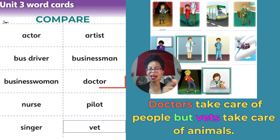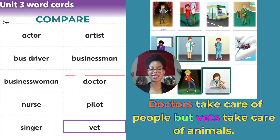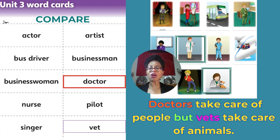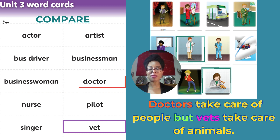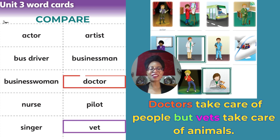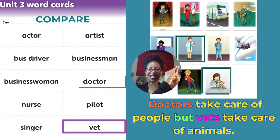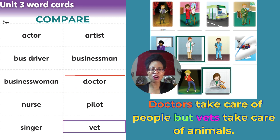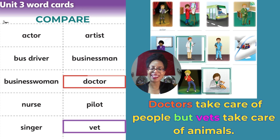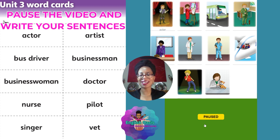You can also compare the jobs in the picture. So I'm going to compare a doctor and a vet. For example, doctors take care of people, but vets take care of animals. In this picture you can see a doctor, and in this picture here you can see a vet taking care of — I think that's a dog, or is it a cat? What do you think? Now it's your turn to try. Pause the video and write your sentences. Go on. Pause the video. I'll be waiting.